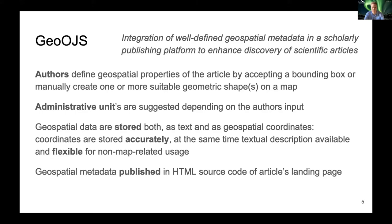Previous work applied text recognition or pattern matching algorithms to derive geospatial metadata from papers, but such fully automated workflows are not without shortcomings. Instead, we decided to streamline the user interaction to create geospatial metadata so that users' understanding of the most suitable connections with locations or areas is unambiguously recorded. Authors can either search for a location and accept the suggested bounding box, or manually create one or more suitable geometric shapes on a map. If authors enter geometries, a gazetteer is used to suggest matching administrative unit names. This allows Geo OGS to store geospatial data in two forms: as text using the administrative unit and as geospatial coordinates in GeoJSON format.